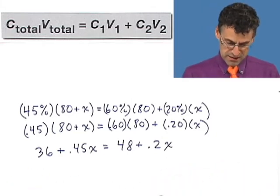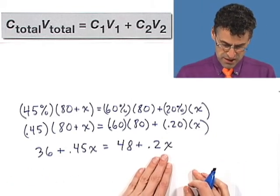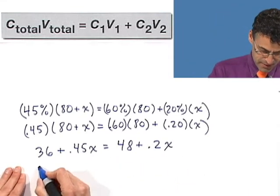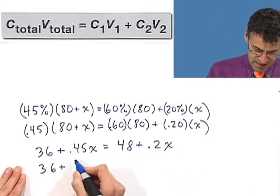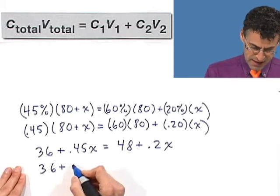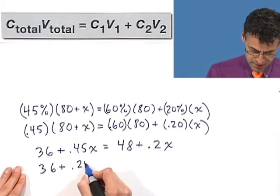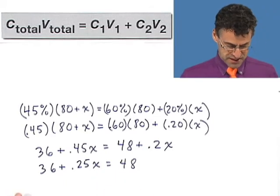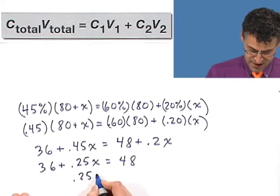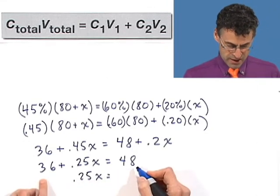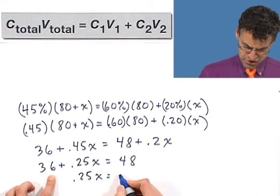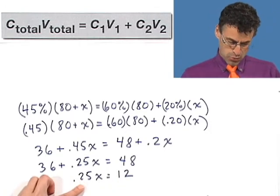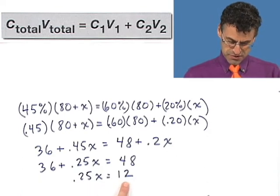So now we have to combine like terms. So let's actually subtract .2x from both sides, or bring this over to the other side, depending on how you want to think about it. And then what I would see here, I subtract, and so I see .25x equals 48. I subtract 36 from both sides, and I see that .25x equals 48 minus 36, which is about 12. I think it's in fact exactly 12.